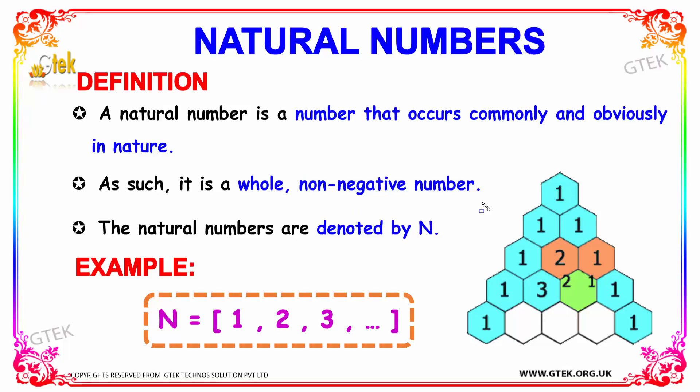The natural numbers are denoted by N. We have an example where the natural number is indicated and denoted by N, followed by some natural numbers starting from 1, 2, 3, and it goes on. So this is one such example for natural numbers.